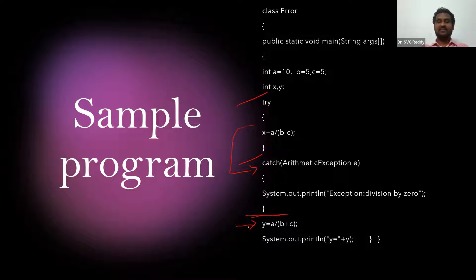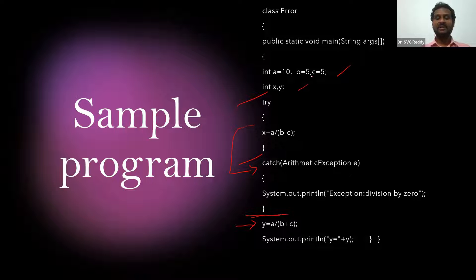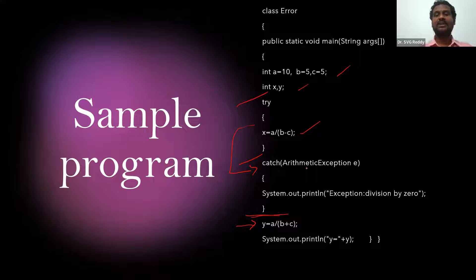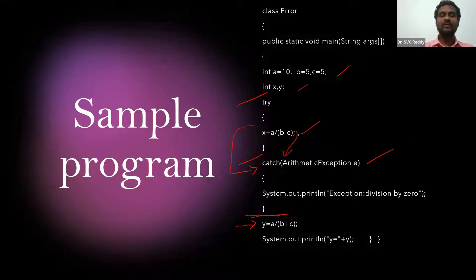Let's understand with an example. We have a = 10, b = 5, and c = 5, with variables x and y. x is equal to a divided by (b minus c), so that is 10 divided by (5 minus 5), which is 10 divided by 0. The processor can't understand this, leading to an ambiguous situation. An exception is raised by the Java system, which then checks for the corresponding catch block — this is an arithmetic exception, specifically division by zero.